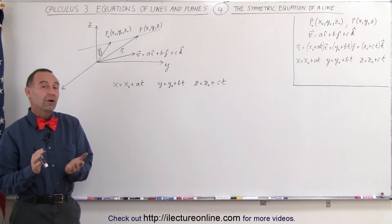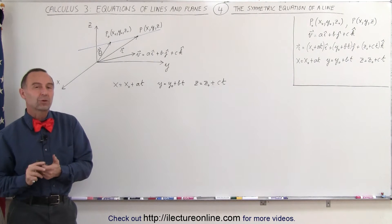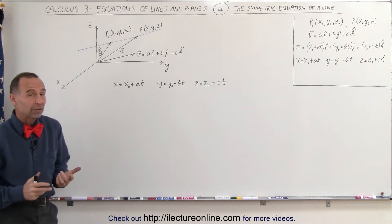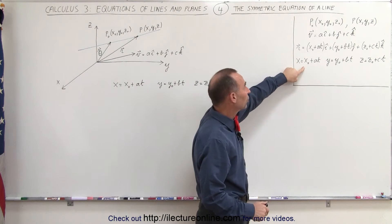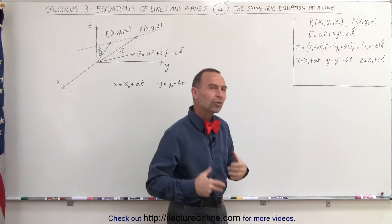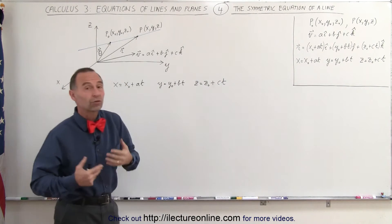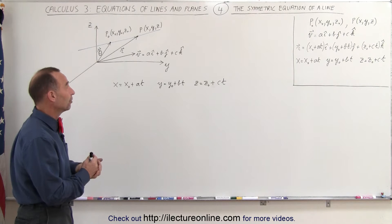Welcome to ElectronLine. So far we've determined two different equations to describe a line in space. The first one was a vector equation, the second one's what we call the parametric equations. But there's a third type of equation we can use to describe a line in space, it's called the symmetric equation.